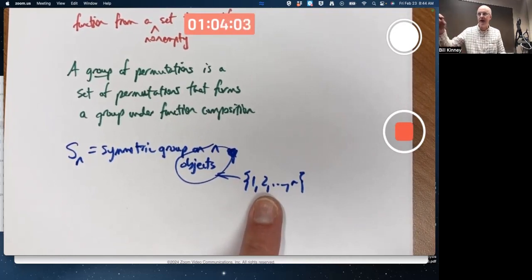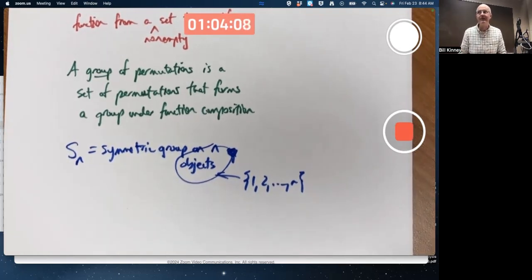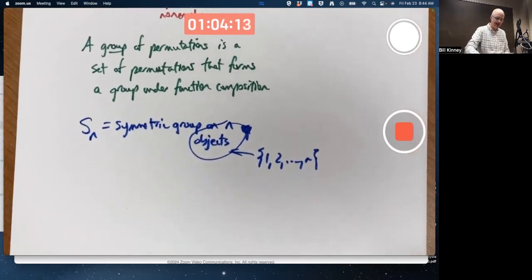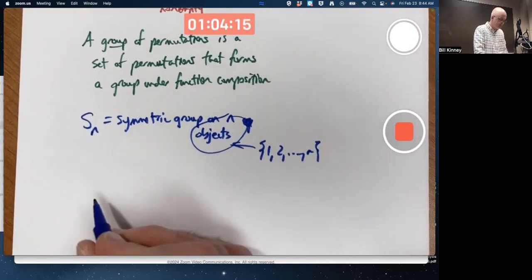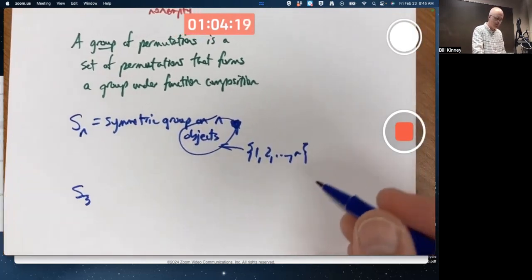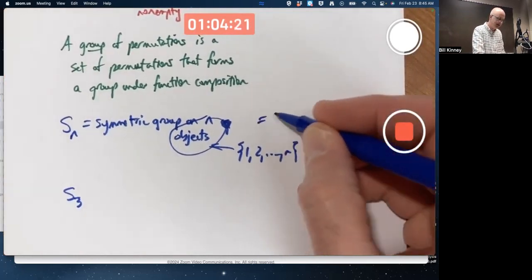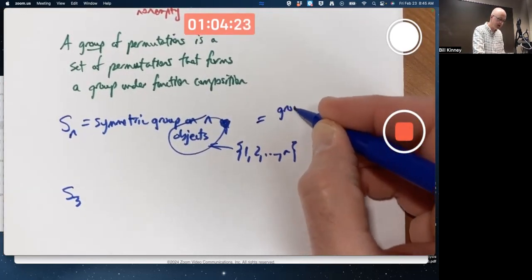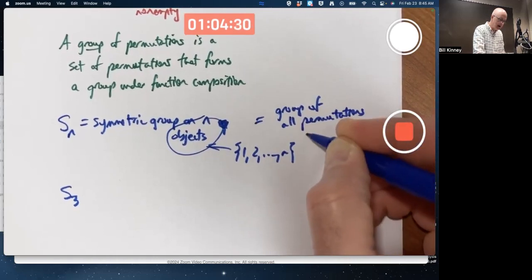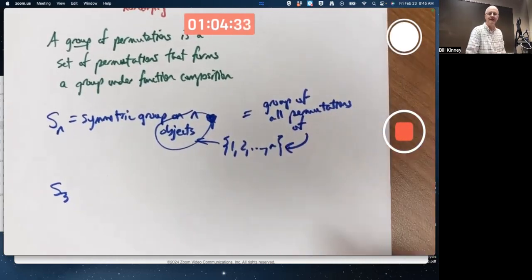Functions that, for example, might map 2 to 5 and 5 to 7 and 7 back to 3 in cycles. As an example. I should say this is the group of all permutations of the elements of this set.